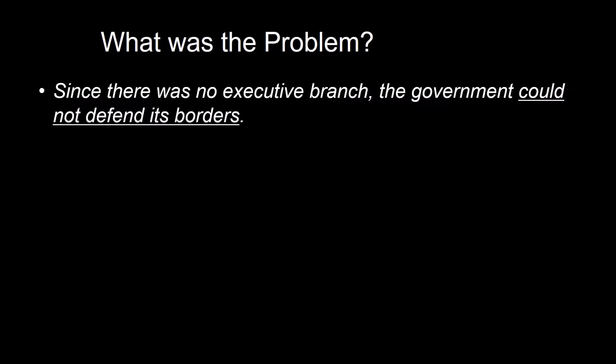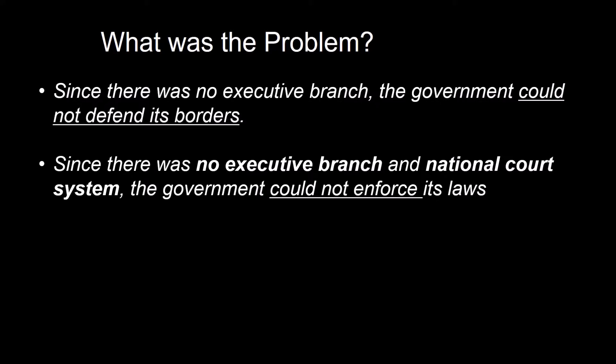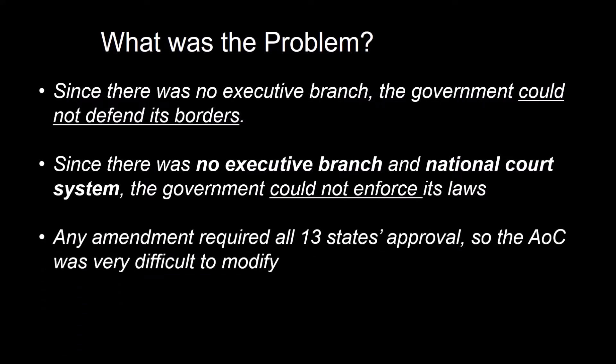Since there was no executive branch, the government could not defend its borders. Without an executive branch or national court system, the government couldn't enforce its laws. Any amendment required all 13 states' approval, making it very difficult to change or modify — there's always going to be one or two states with a problem. They had some big problems: foreign problems and domestic problems.